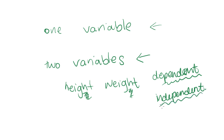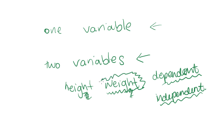The way to tell them apart is to say the statement 'blah depends on blah' and see if it makes sense. For example, 'height depends on weight' does not make sense, because your height doesn't depend on how much you weigh. But 'weight depends on height' does make sense. So weight would be the dependent variable, and height would be the independent variable.